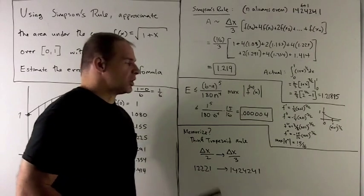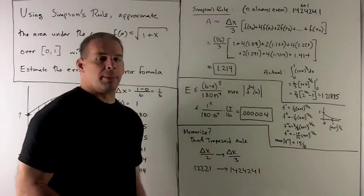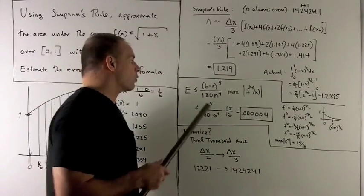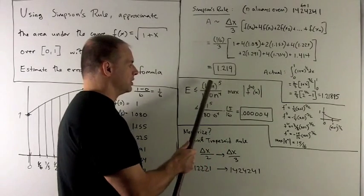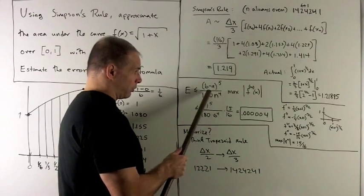All right, for memorization, definitely you want to memorize this if you're responsible for it. Okay, the error rule, you're going to have no choice but to memorize if you're responsible for it. There's no easy, quick way to re-derive this.